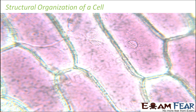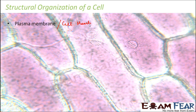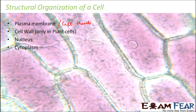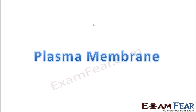Talking about the structural organization of a cell, it consists of the plasma membrane, also known as the cell membrane — I will be using these terms interchangeably. There is also the cell wall, which is present only in plant cells as an additional covering outside the plasma membrane, as well as the nucleus, cytoplasm, and other cell organelles.